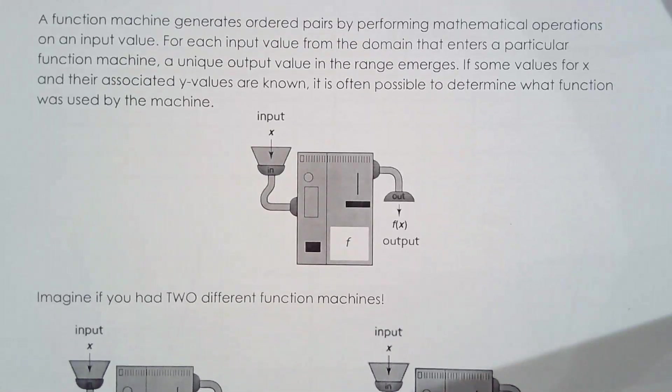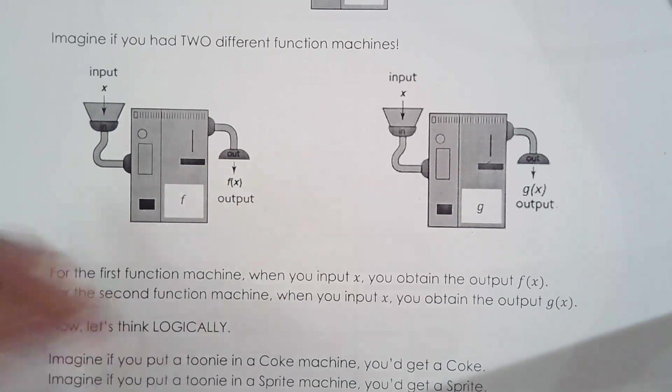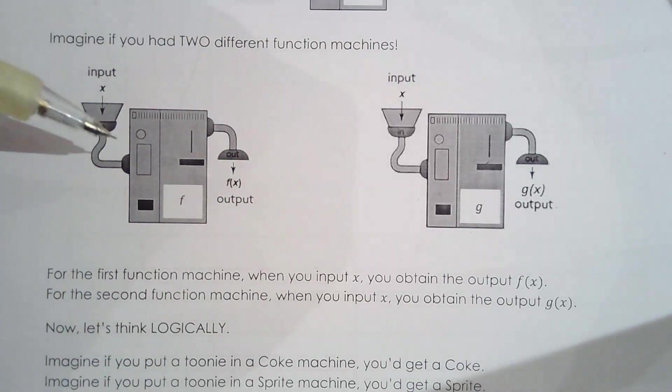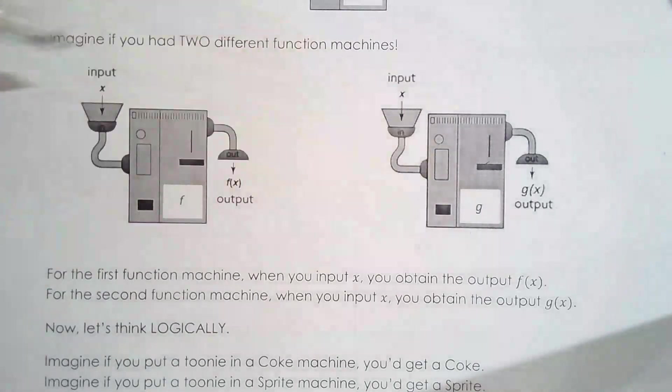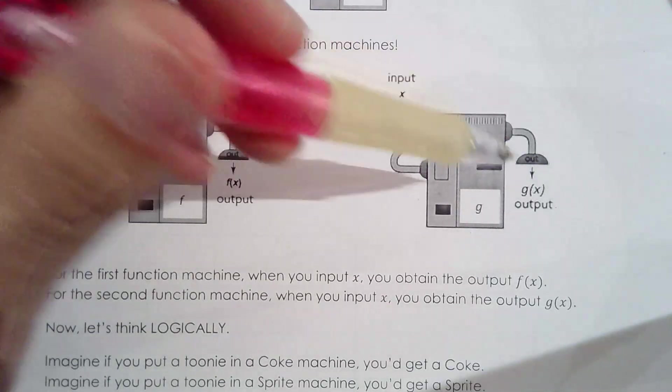What if you had two machines? Because that's what we're going to do, work with two machines at the same time. We have f of x or f and we have g, but the idea is the same regardless of the machine. You have an input and you have an output.